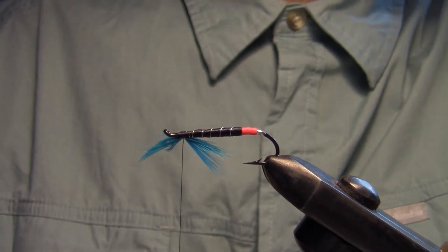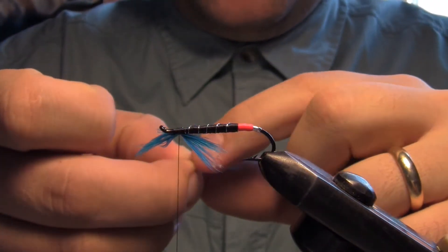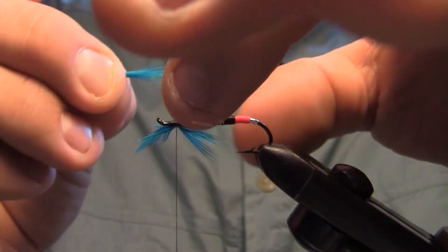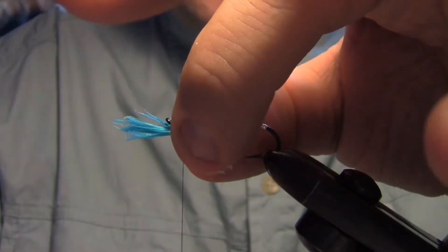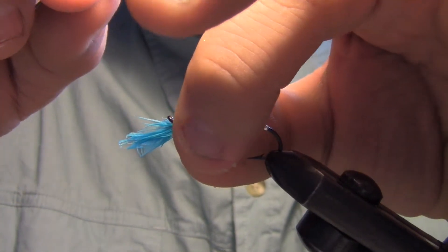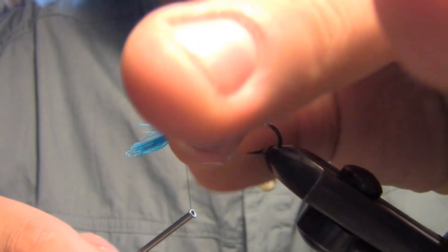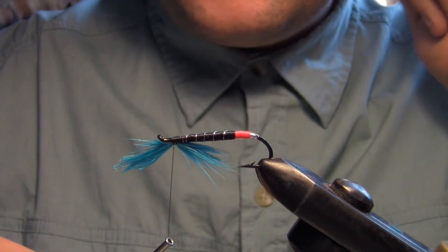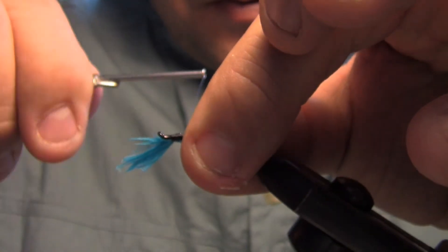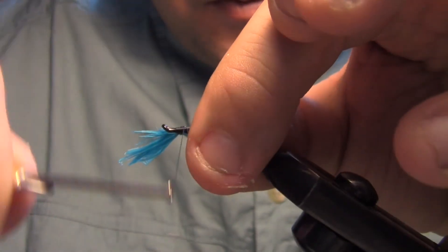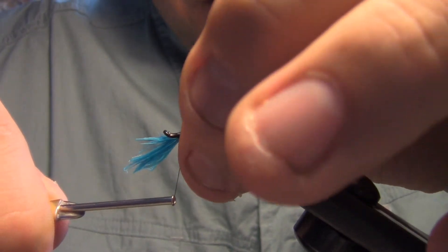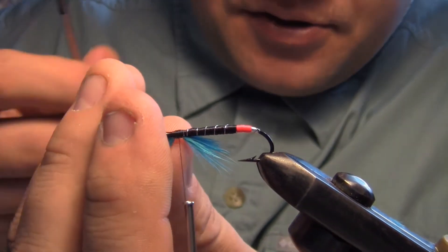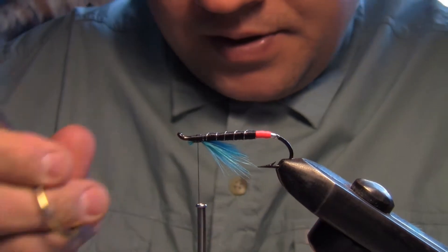I'm going to put a little bit more actually. I got some more hackle here, blue hackle. Tie this in. See how that looks there. Yeah, I'm happy with that. Tie that in, trim this off the front here, up at the eye.